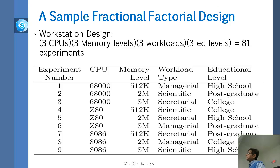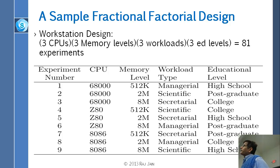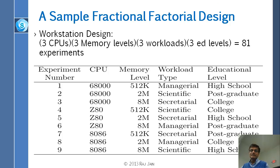Here is the fractional factorial design. For the problem which had 324 experiments, if we have everything at 3 levels — 3 CPUs, 3 memories, 3 workloads, and 3 users — that would be 81 experiments. Instead of 81, we can do just 9. This is a specific combination of 9 experiments — not easy to understand how this combination was arrived at — but with this list we can tell you the effect of each factor and many interactions. How we came up with this table is something you will learn later on.